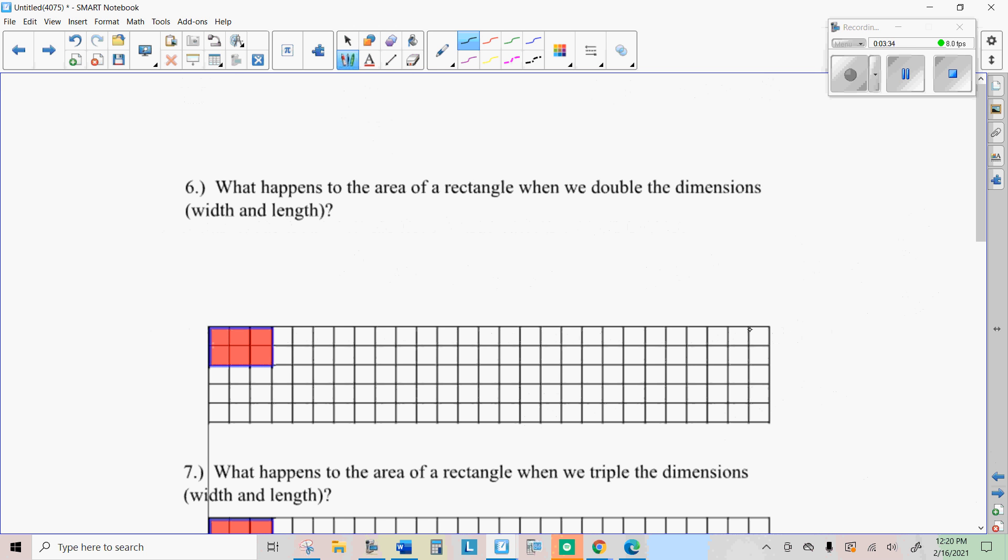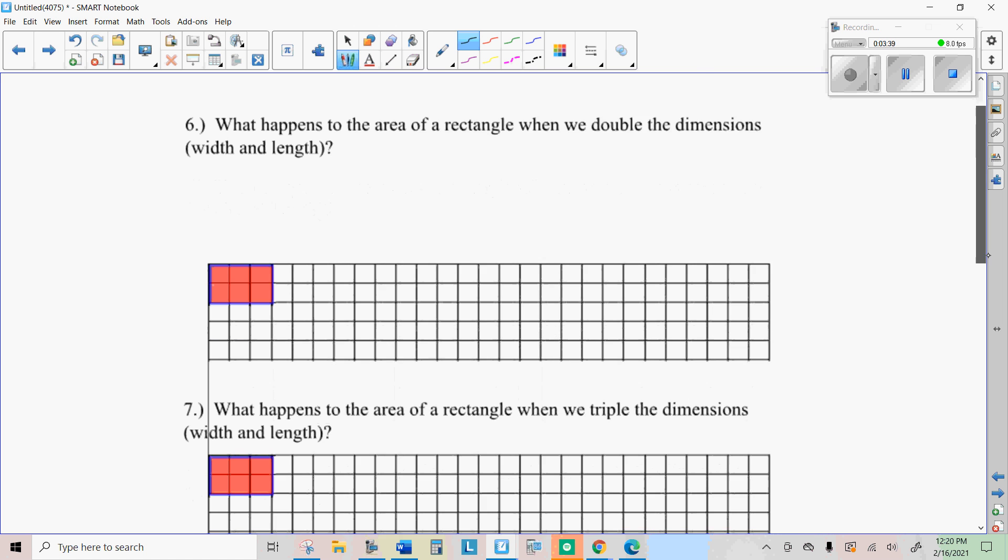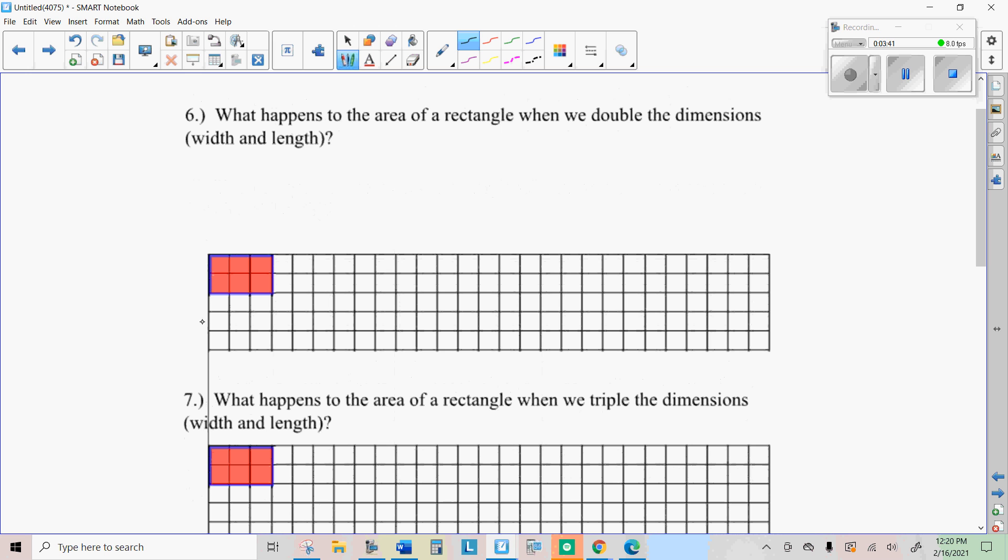So what happens to the area of a rectangle when we double the dimensions, length and width? So if we double this, you can tell there's six here, right? So if we double the width and the length, we end up with this rectangle. And if you look closely and count them, you now have six by four, which is 24. So when you double your area, you do times four. Go ahead and fill in the other ones.